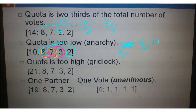Next, gridlock. When the quota is too high. So there are 20 total votes. But the quota is higher than the number of votes. So it's literally impossible to pass the motion.